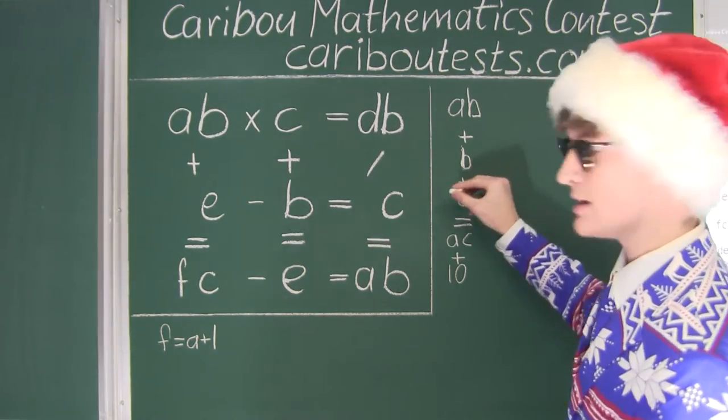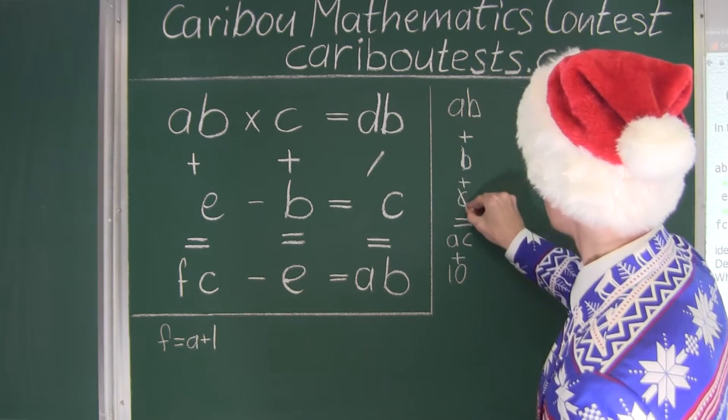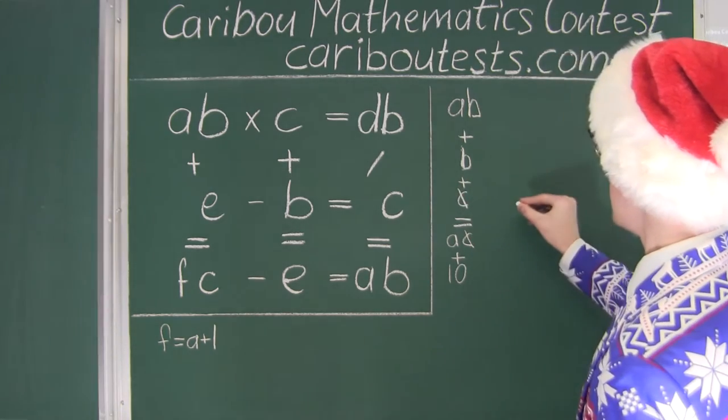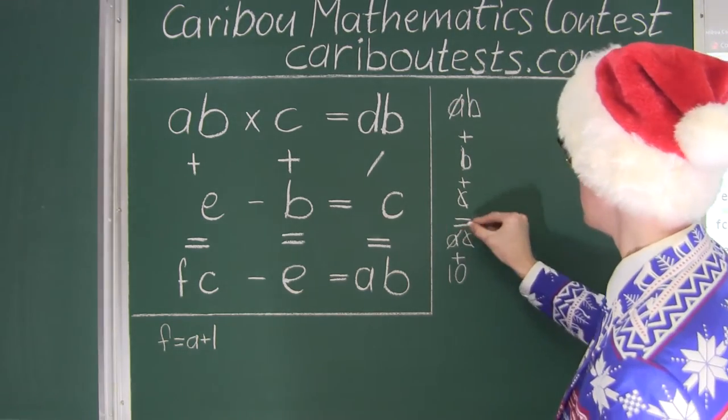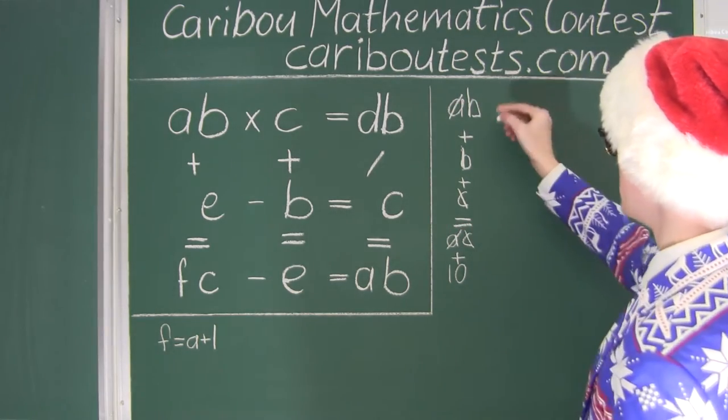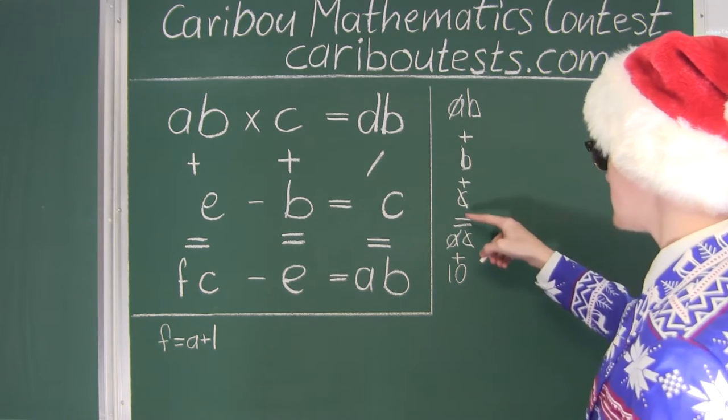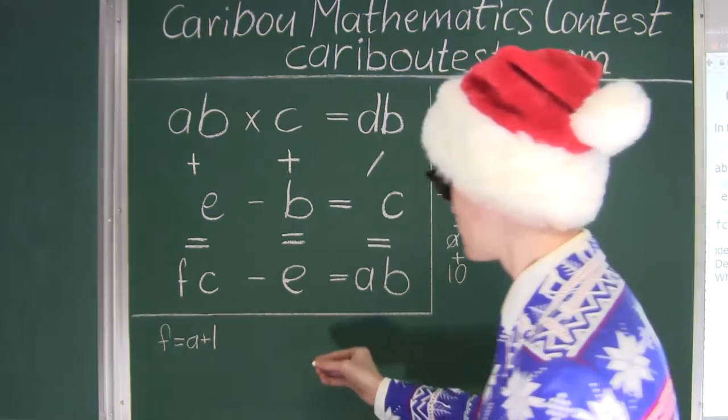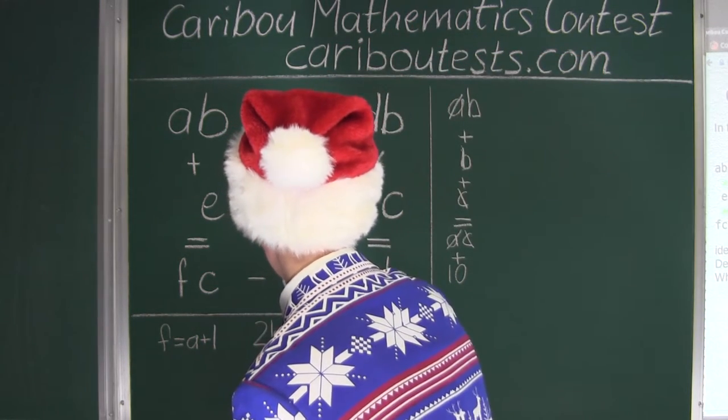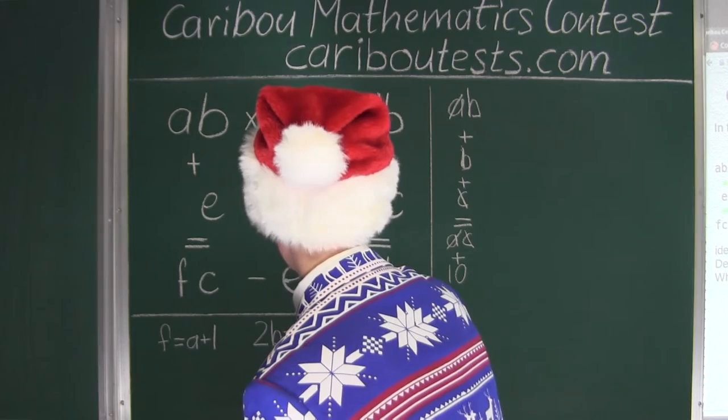Now we can cancel out the C in the ones column here, C and C. And then we can cancel out the A in the tens column here, A and A. And what we are left with is B plus B is equal to ten. So that's just like 2B, which is equal to ten.